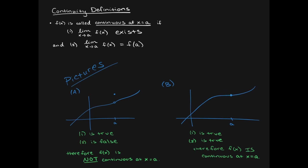A fluffy way to think about it: in order to be continuous, you have to be able to draw the line without picking up your pen from the paper. On the left one, I have to pick my pen up to get to the dot, so it's not continuous. With the right one, the dot is filled in and I can just keep drawing. If you pick another x value — say x equals b on this picture — it actually is continuous there. Each x value has its own continuity property.